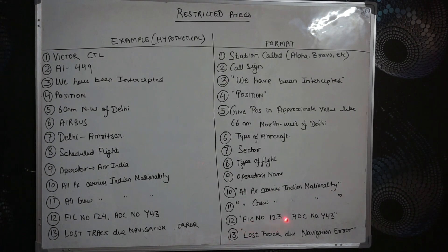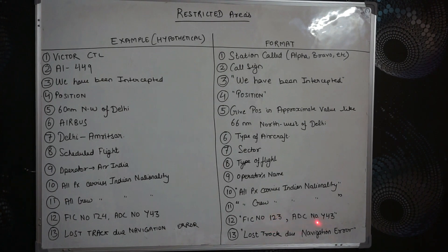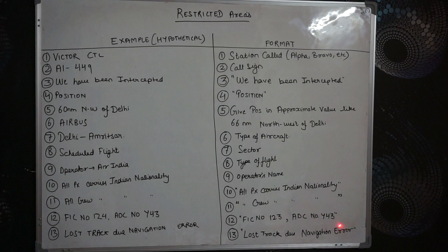Then you have to give the FIC number, which is the Flight Information Center number. This is hypothetical - the FIC number has changed to alphanumeric, it can contain an alphabet also. Then the ADC number - for example Yankee 43, so it can be Yankee 123. ADC is Air Defense Control number, meaning you have taken permission from Air Defense Control to fly in the restricted area. You have to mention that ADC number, then say 'lost track due navigation error.' That is the format you have to follow.